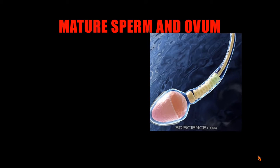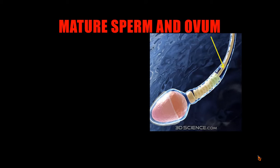Let me first remind you of the shape of the mature sperm. This is the head region containing the nucleus, which contains the genetic material. The head is covered by a cap called the acrosome, containing the enzymes necessary for penetration of the layers covering the ovum. This is the mid piece, which contains the mitochondria, responsible for production of the energy necessary for the sperm to move and travel through the female genital tract. This is the tail, the part of the sperm responsible for the motility or movement of the sperm.